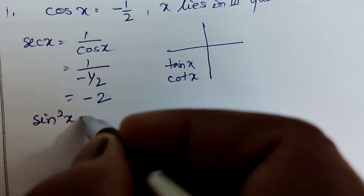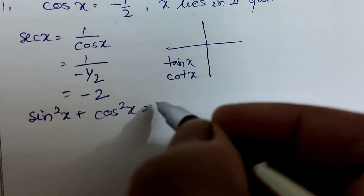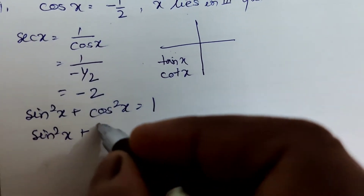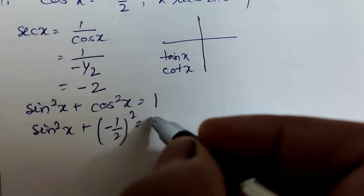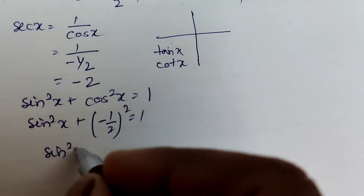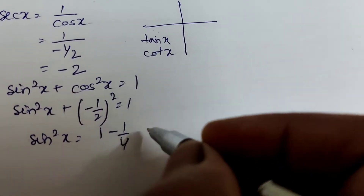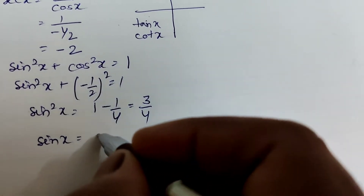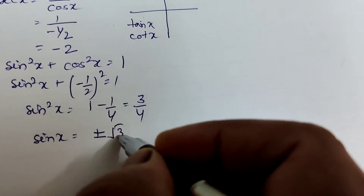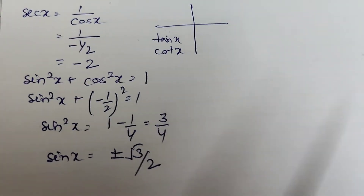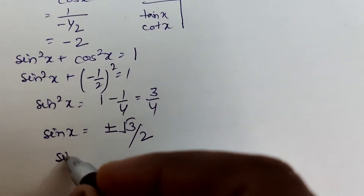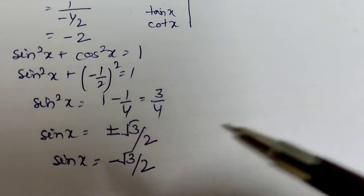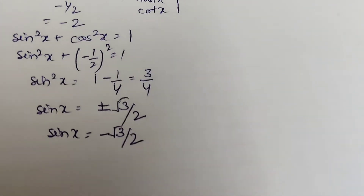Using sin²x + cos²x = 1, putting cos x = -1/2: sin²x = 1 - (1/4) = 3/4, so sin x = ±√3/2. Since x lies in the third quadrant, sin x is negative, therefore sin x = -√3/2.